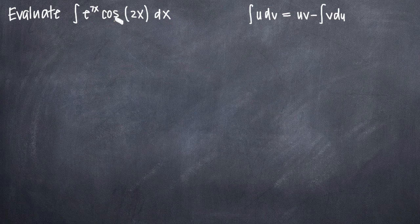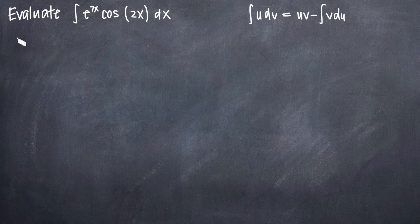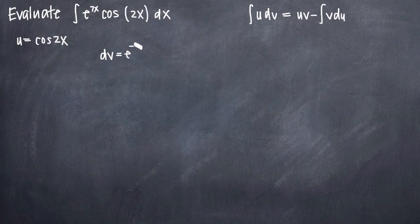We have to identify which part of this function will be u and which part will be dv. There are no other parts, so we have to assign the entire integral, including dx, to u and dv. For this particular problem, whenever you have an exponential function multiplied by a trigonometric function, your best bet is to assign u to the trigonometric function and dv to the exponential. So we'll say u equals cosine of 2x, and dv equals e to the 7x dx.